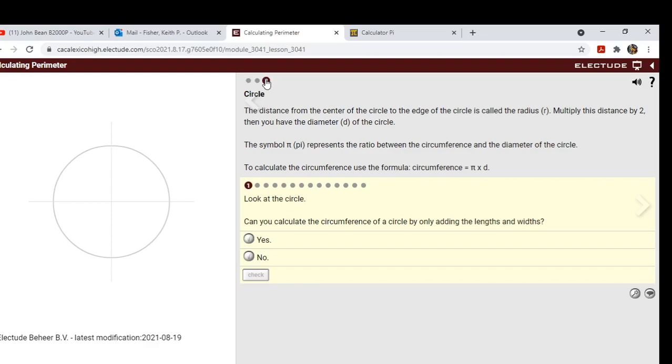Look at the circle. The distance from the center of the circle to the edge of the circle is called the radius r. So center of the circle to the edge of the circle, multiply this distance by two, then you have the diameter of the circle.